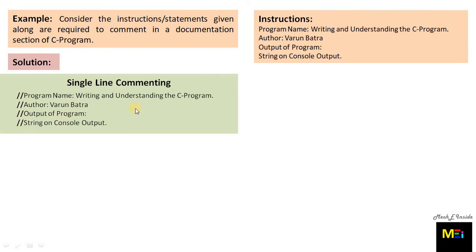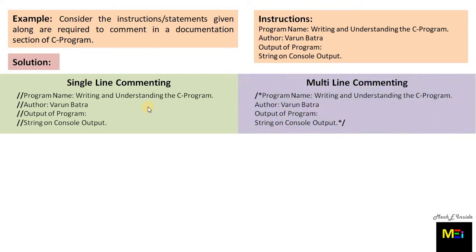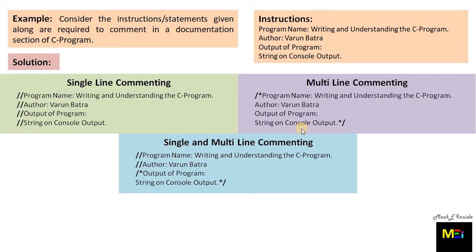Now let's have a look at the multi-line comment format, in which we use slash-asterisk, then write the program name, author, and output of the program. When all these instructions are over, we terminate that particular multi-line comment with asterisk-slash. Finally, we can see that both styles in a single program can also be used.